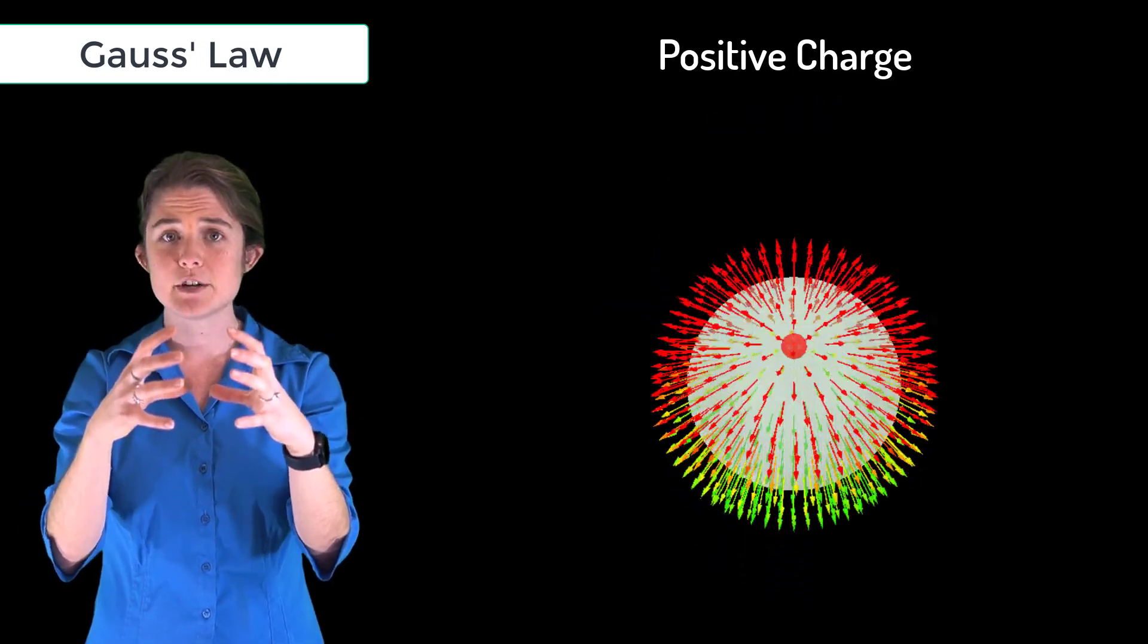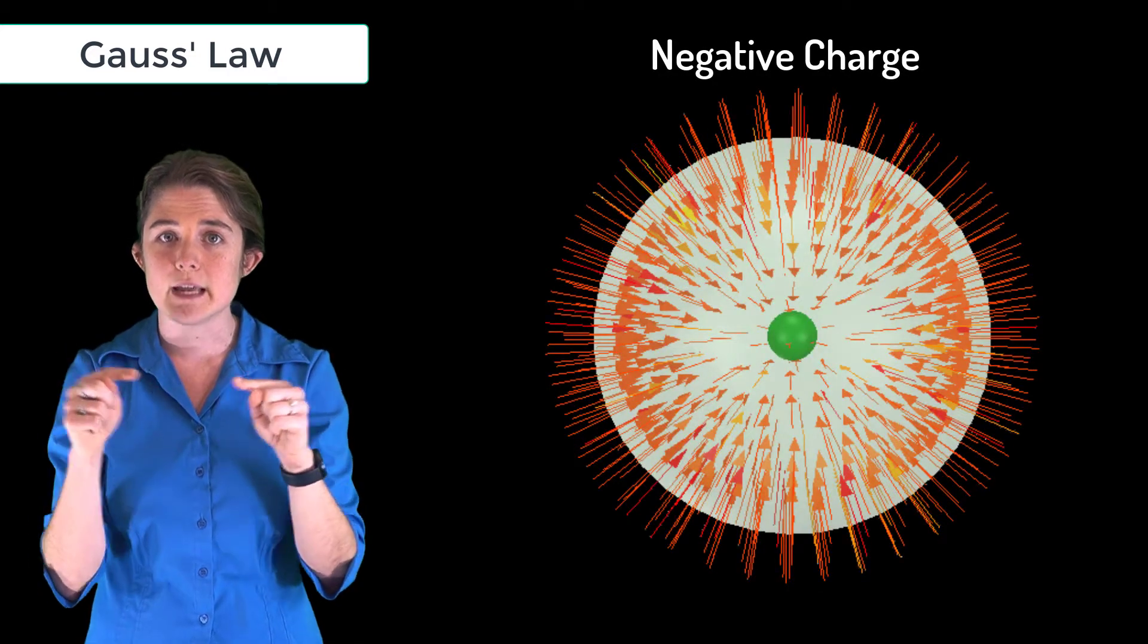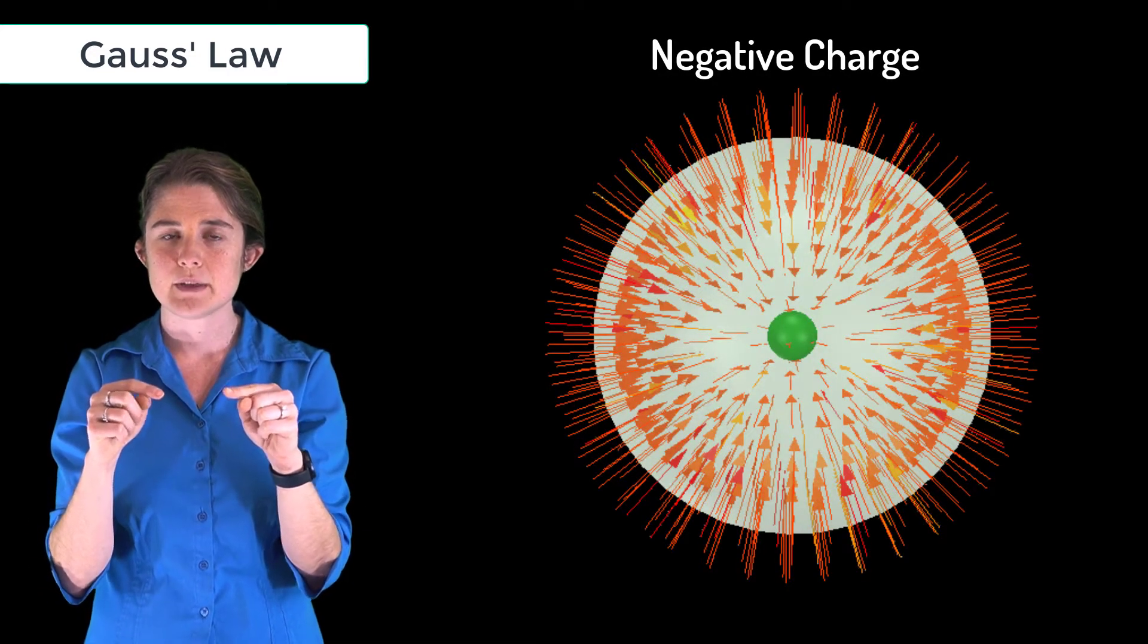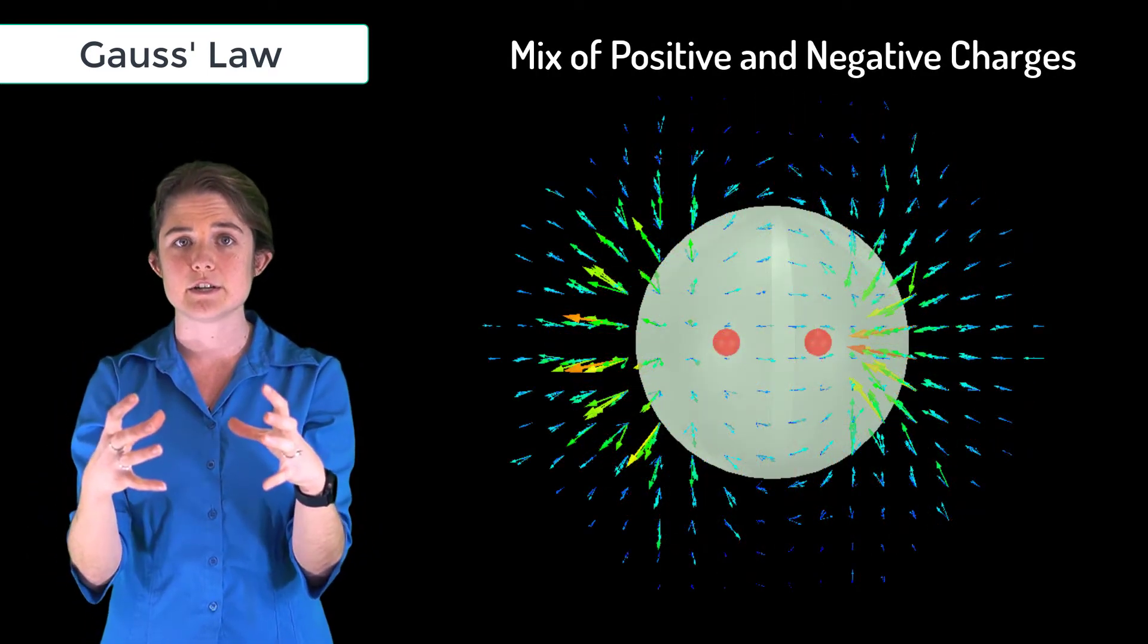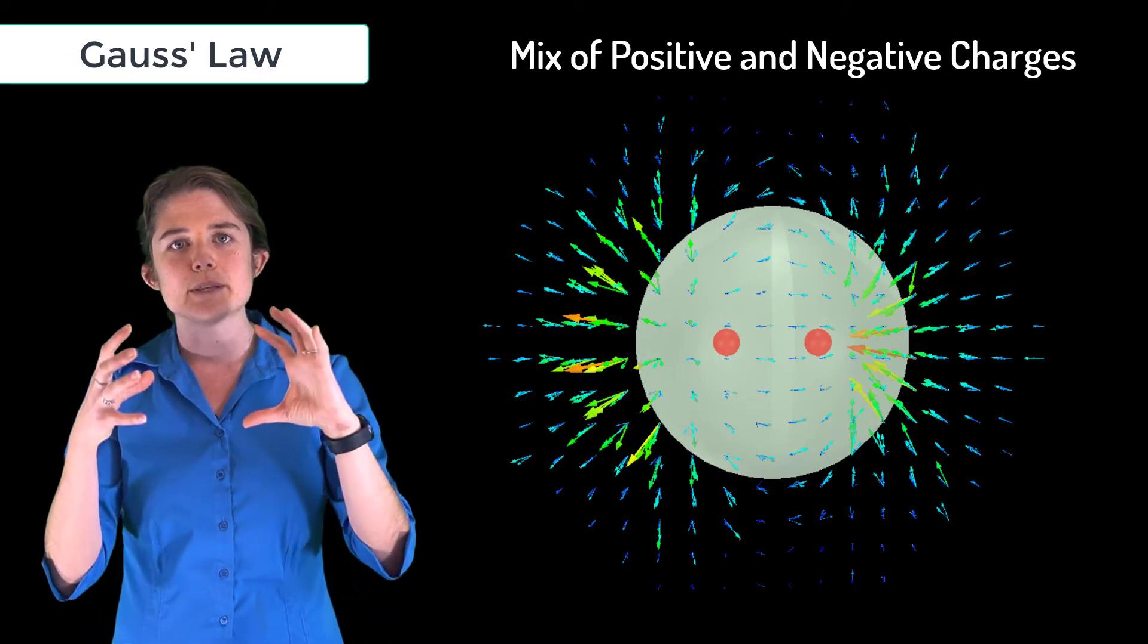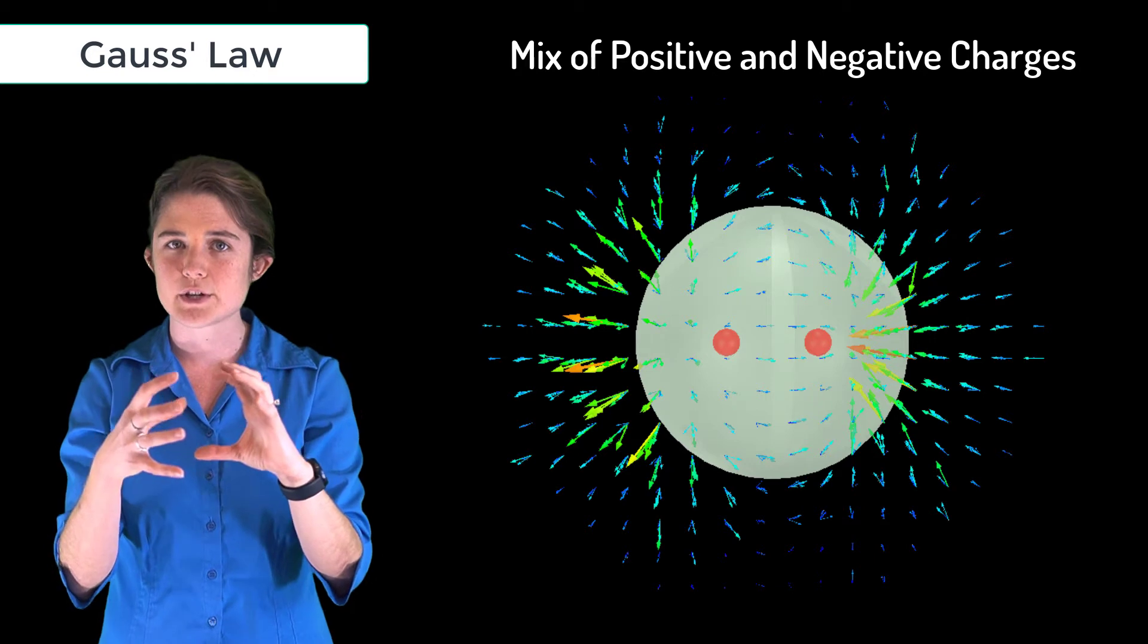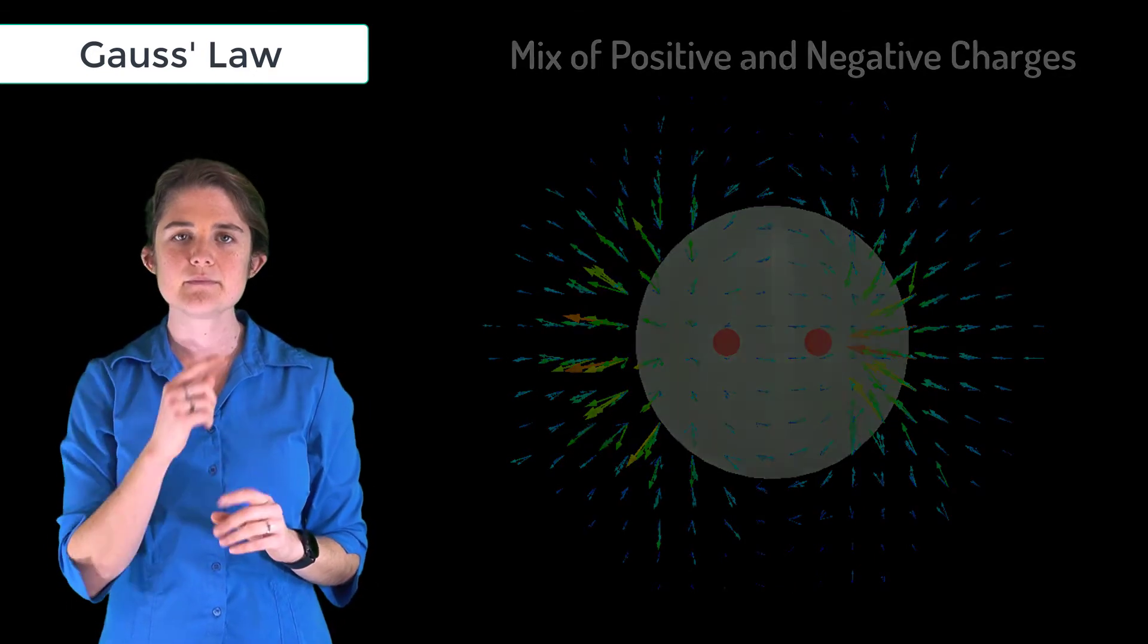Similarly, a negative charge will result in inward pointing field vectors. And if the sphere encloses a collection of positive and negative charges, some of the inward pointing vectors will cancel with outward pointing vectors, but the total vector flux through the surface will indicate the net charge enclosed by the sphere.